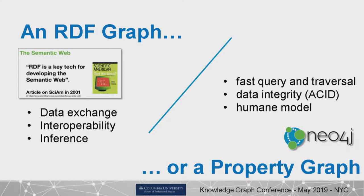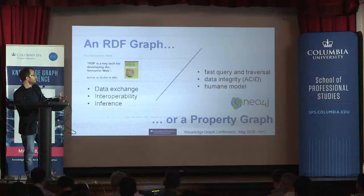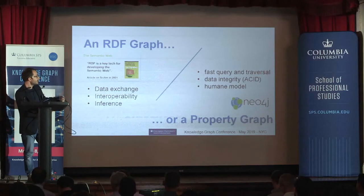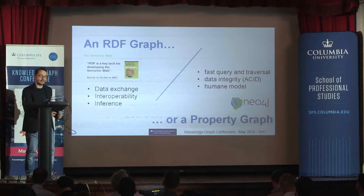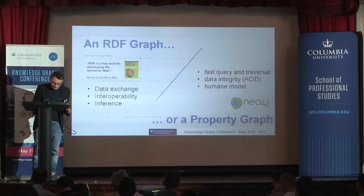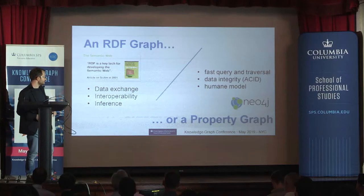This was a group of engineers dealing with the problem of working with data as an object model in applications, and having to deal with table-based storage in relational databases — there was this impedance mismatch between the two models. They thought: what if we came up with a way of representing data more aligned with how we use it in applications? Their focus was storing data efficiently, retrieving it fast, and data integrity was critical.